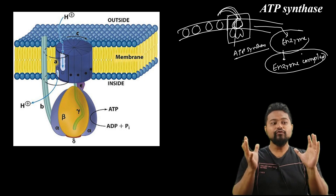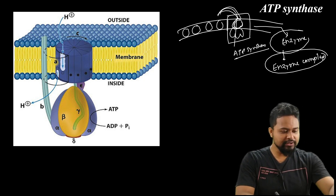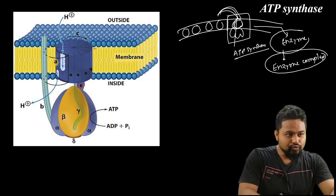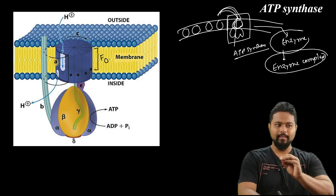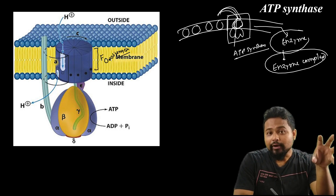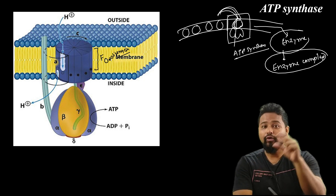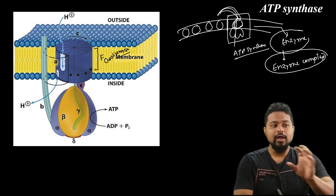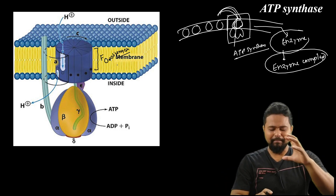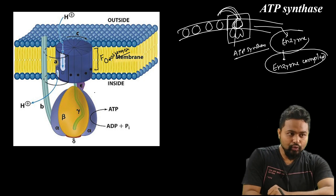As an overview, ATP synthase has two main components: the F0 component and the F1 component. The F0 component is located in the membrane. F0 is named so because it is sensitive to oligomycin — when oligomycin chemical is added, this component is inhibited. That is why it is called the F0 component.